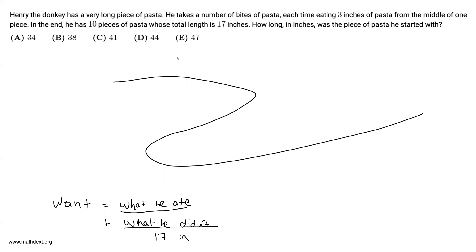So if you're Henry, you start out with one piece of pasta, and you're going to take bites until you have 10 pieces of pasta. This first bite is going to split it into two pieces. This next bite is going to split it into three pieces. The next bite is going to split it into four pieces, and so on and so forth. And you can see that every time he takes a bite, he makes one new piece.